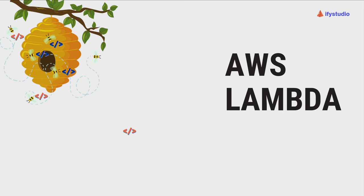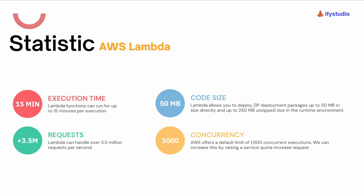A few stats related to AWS Lambda: execution time — Lambda only runs for up to 15 minutes; after that it stops, and any code surpassing that 15-minute window will be terminated. For requests, Lambda can handle over 3.5 million requests per second. For code size, if you want to work with the Lambda IDE, your overall code size should be less than 50 MB; otherwise Lambda won't let you edit in the console and you'll need to upload a zip and test locally before deploying.